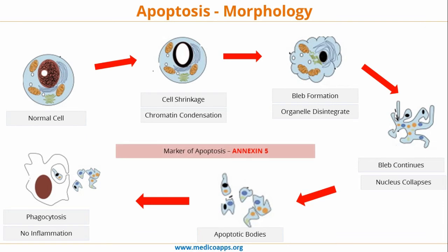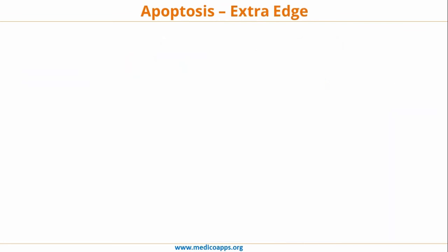The marker of apoptosis is Annexin 5 — this has been asked many times in exams. The marker for apoptosis is Annexin 5, and the flipping of phosphatidylserine is from inside to outside. These two points on apoptosis are regularly asked.